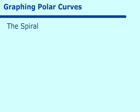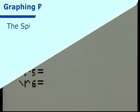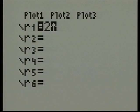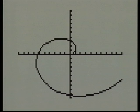The next curve is the spiral. The spiral is either r = aθ or r = a/θ. It's just direction as far as that one is concerned — let's try this on our calculator.